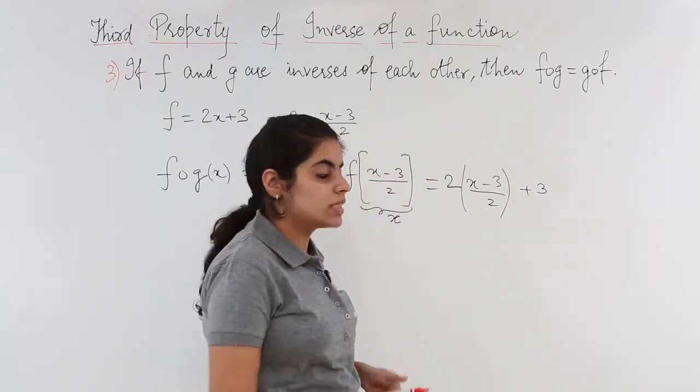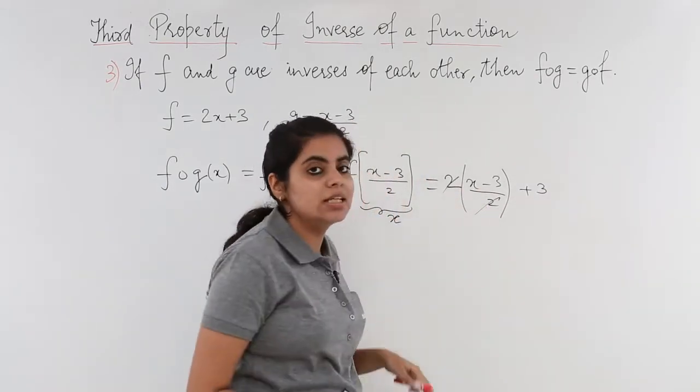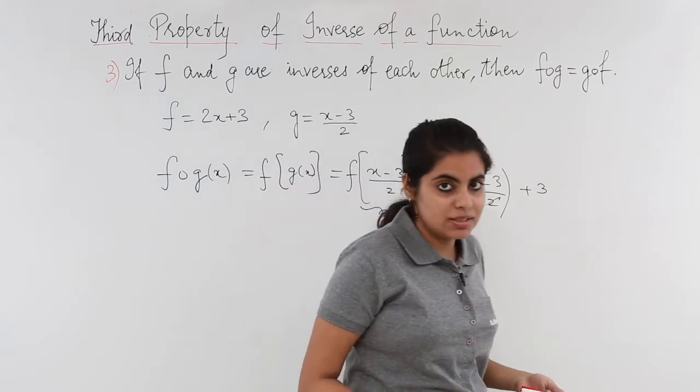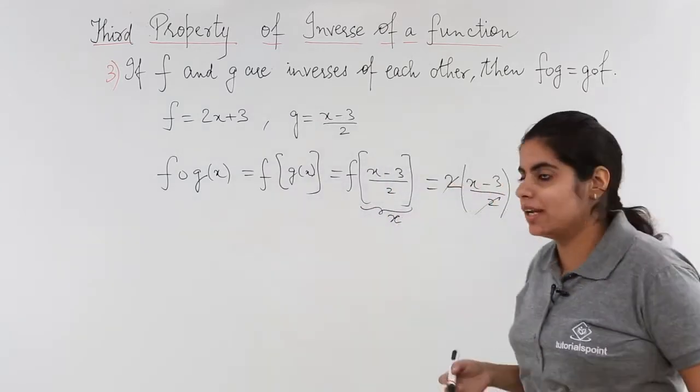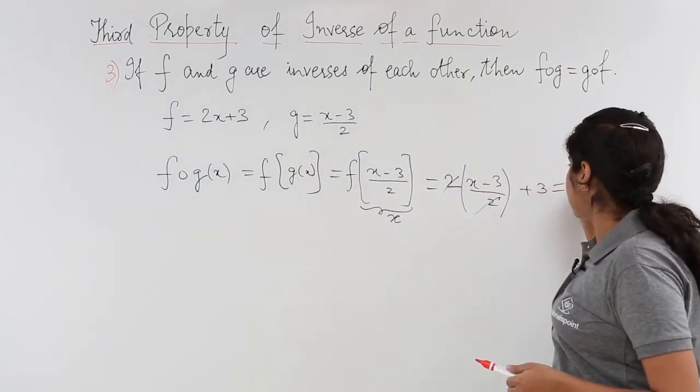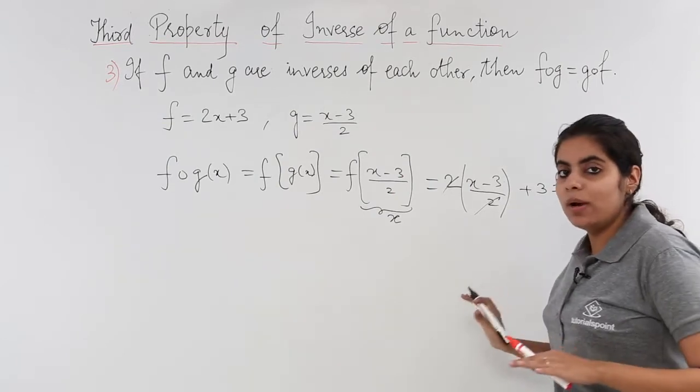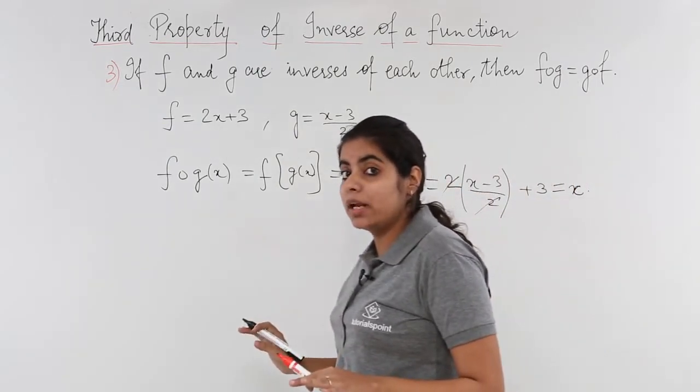Now 2 and 2 gets cancelled. x minus 3 plus 3, minus 3 and plus 3 again cancelled. So I get x. Now x is the result that I obtained for fog.